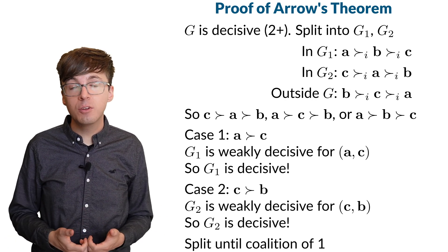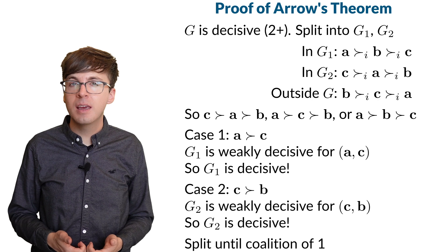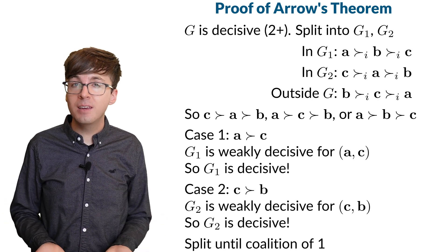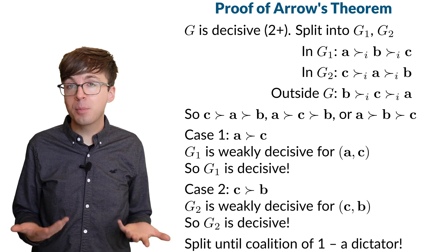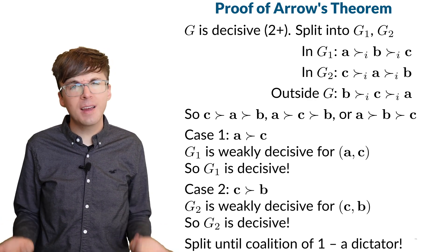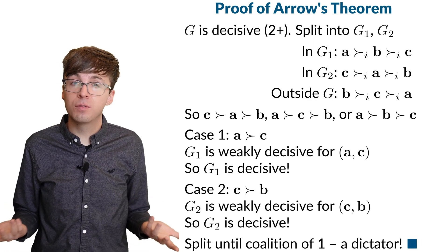We can repeat this until we have a decisive coalition with exactly one person. If there's a decisive coalition with exactly one person, it means that person's rankings determine the rankings for the group, so that person is a dictator. This violates our conditions, so the proof is complete.